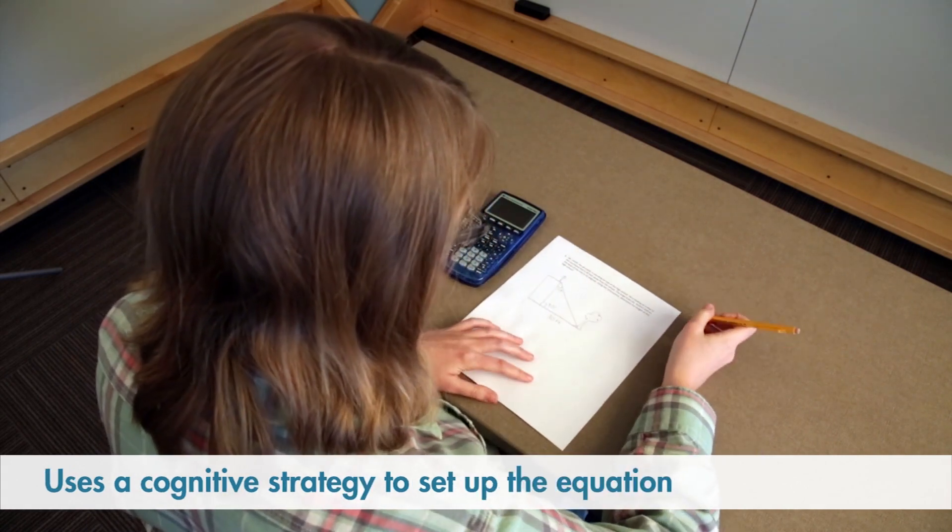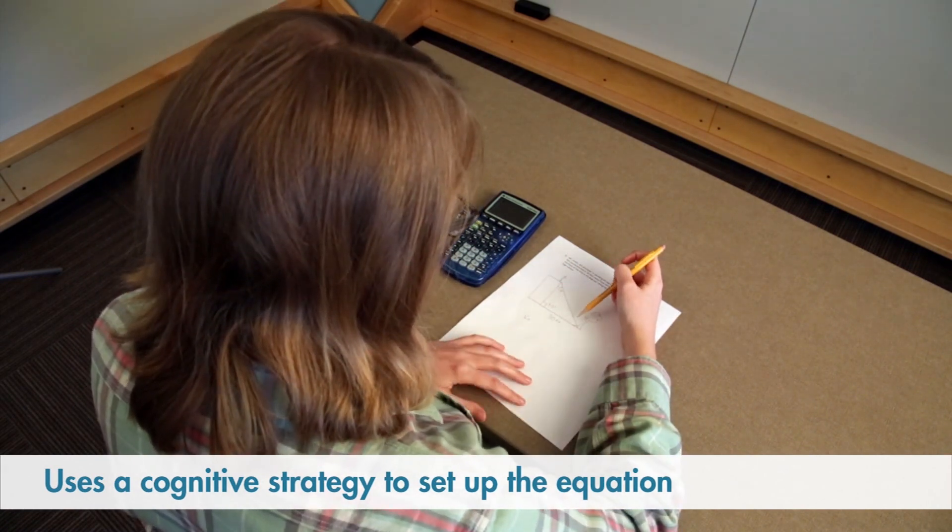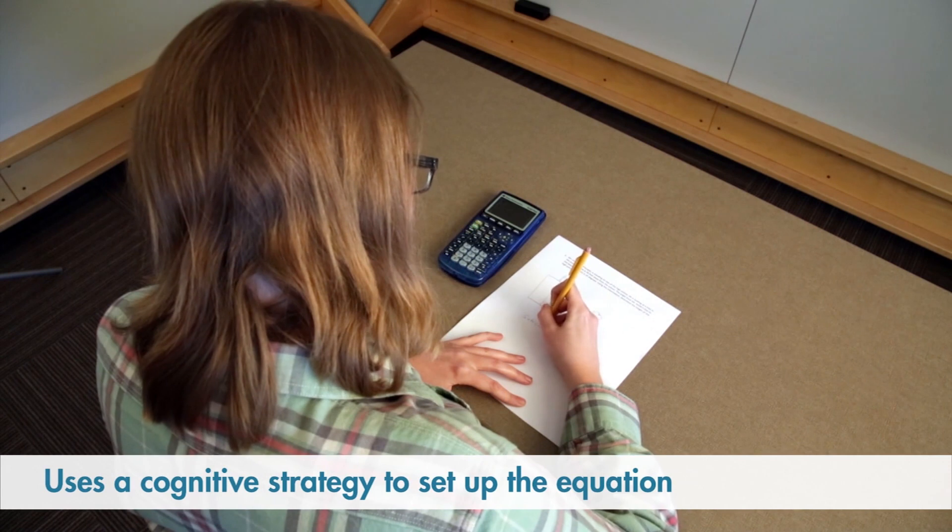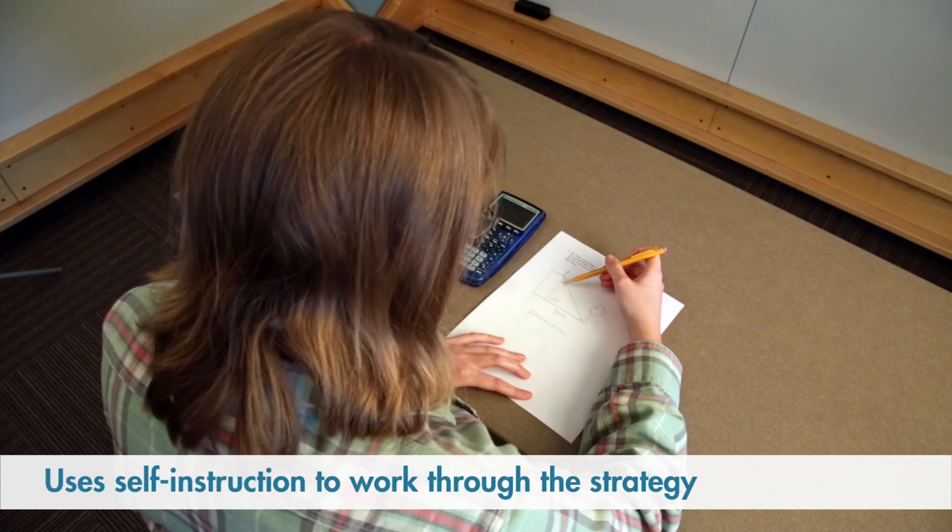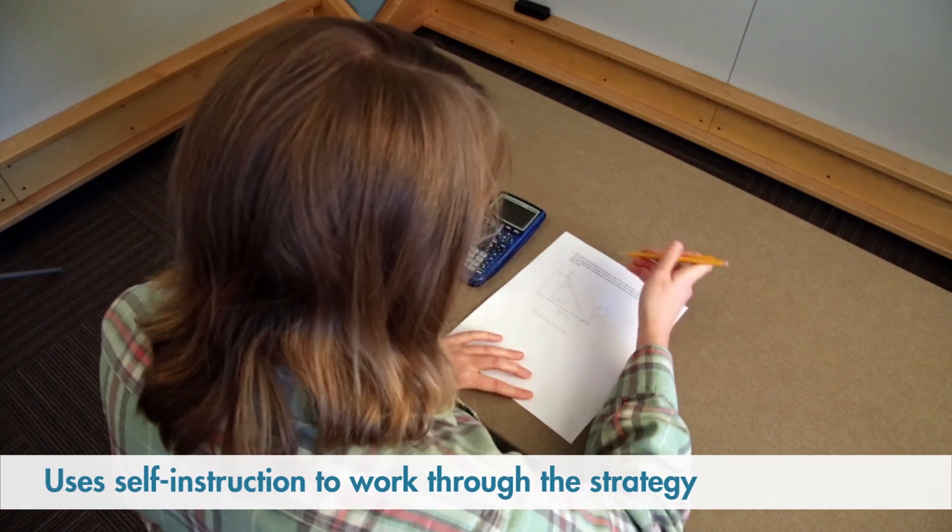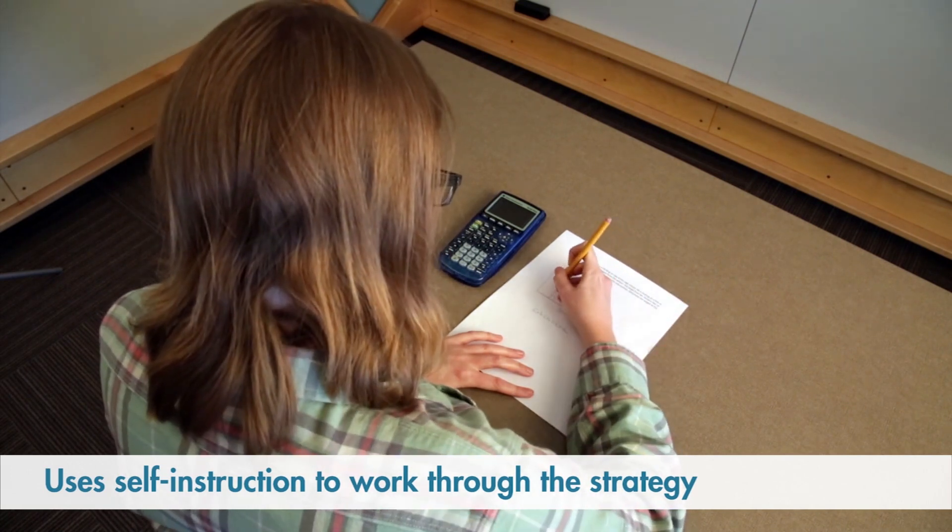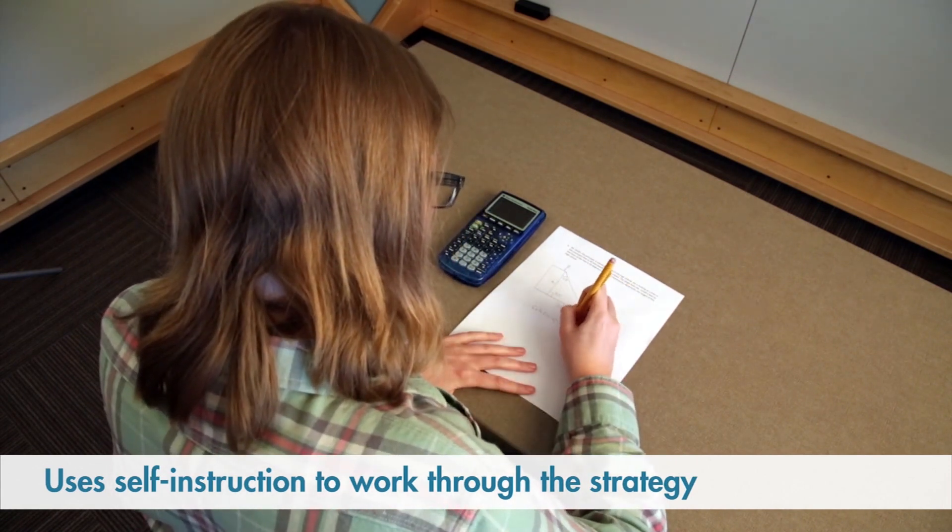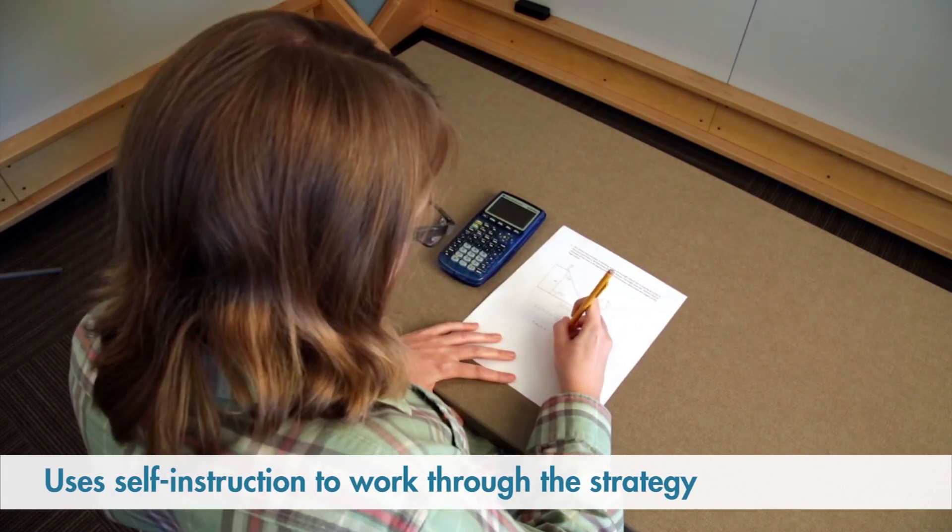There's a trick that I'm going to use called SOHCAHTOA that you can use to find the sides and angles in a right triangle. The opposite side to 43 degrees is 30 feet right here. So what do I need to find? I need to find the adjacent side. I'll label it with an A. I look at SOHCAHTOA and I know that I need to find the tangent because tangent equals opposite over adjacent.